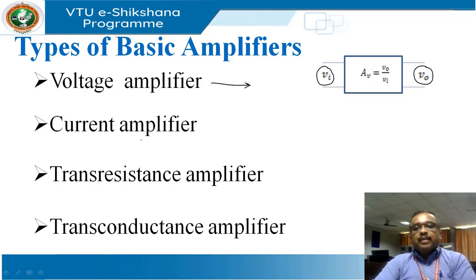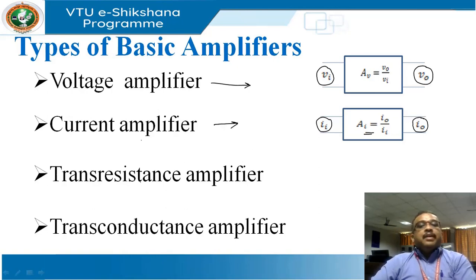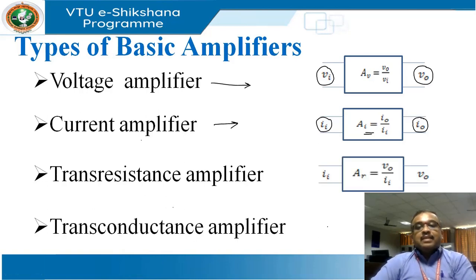In a current amplifier, both input and output quantities must be current quantities. The gain is I0 divided by Iin, hence the name current amplifier. Then we have the trans-resistance amplifier.